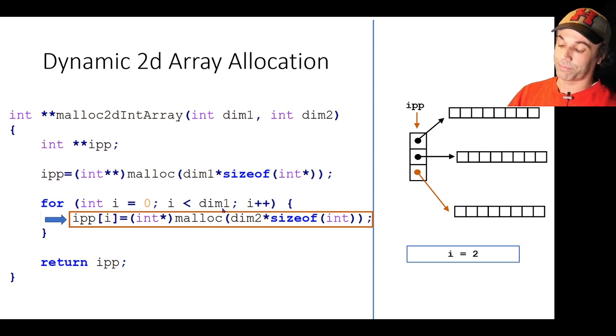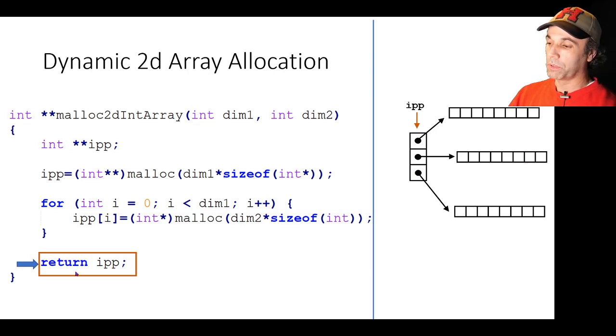So lastly we return IPP. Now remember that's just a number. That's just this memory location and using that memory location in the parent function which called malloc2dIntArray it will be able to follow these pointers to access all of the elements of this 2D array. And a critical thing to remember here is because we've used malloc this memory has been allocated on the heap so it will be persistent when this function returns. That's a really key point. You must remember that.